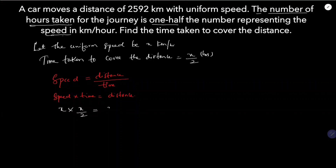The distance given is 2592. So substituting: x multiplied by x/2 equals 2592, which gives x squared equals 2592 times 2.